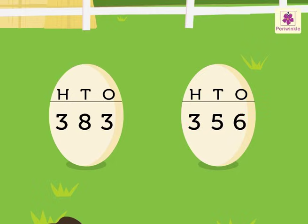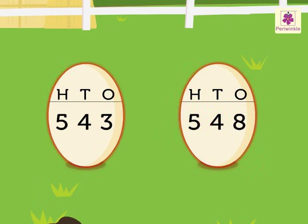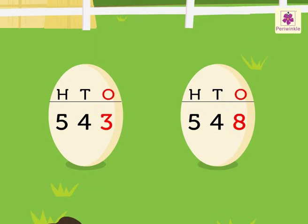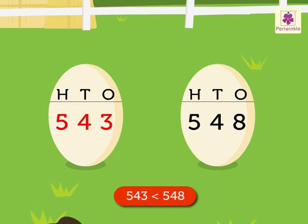Let us see one more example. Look at the numbers 543 and 548 on the eggs. Both numbers have 5 in the hundreds place, so we compare the digits in the tens place. Both numbers have 4 in the tens place, so now we compare the digits in the ones place, that is 3 and 8. Here, 3 is smaller than 8. Thus, we say 543 is smaller than 548.